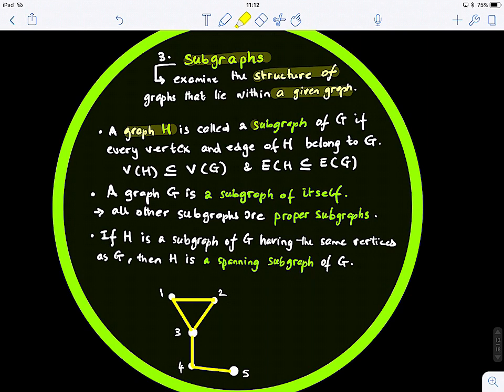So let's define it mathematically. So a graph H is called a subgraph of G if every vertex and edge of H belong to G. So it's quite simple. It means like the set of edges of H, they belong to the set of edges of G, and also the edges, sorry, the set of nodes belong to the set of nodes of G, and the edges also belong to the set of edges of G for the subgraph H. Now, a graph G is a subgraph of itself, of course, because it belongs to itself, right? So that's very trivial.